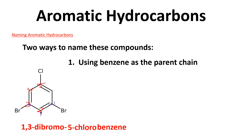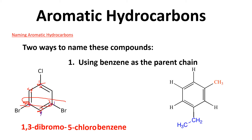You could number this differently — you could call the chlorine position one, and the bromines at three and five, though your numbers might get higher that way. Here's another example: this one has a methyl and an ethyl group. It's a benzene, and I named it 1-ethyl-3-methylbenzene. I'd also accept 3-ethyl-1-methylbenzene since the numbers would be equivalent due to symmetry.